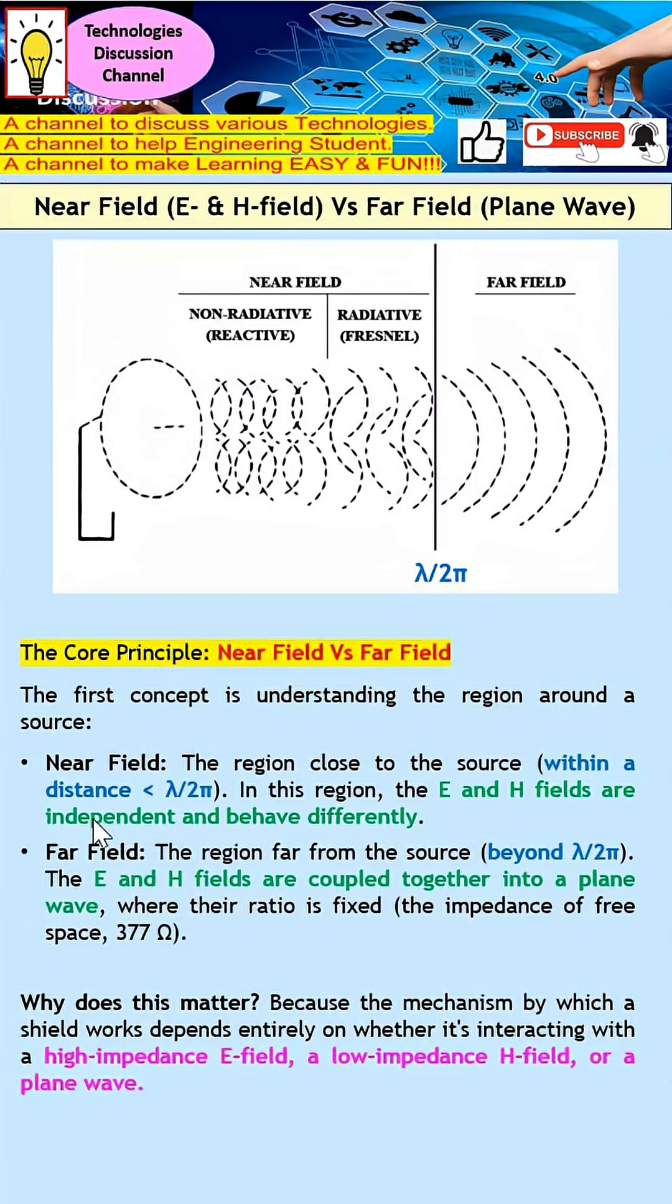Let's take a close look at the near field. Under this near field, this is the source. The near field is the region closest to the source. In this region, as I mentioned earlier, it is mainly dominated by either the E field or H field, and they are actually independent. Because of this, they behave differently.